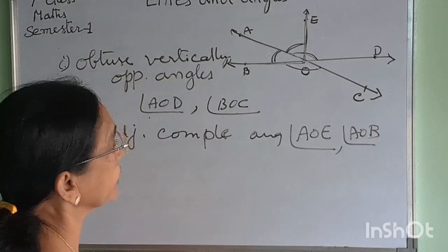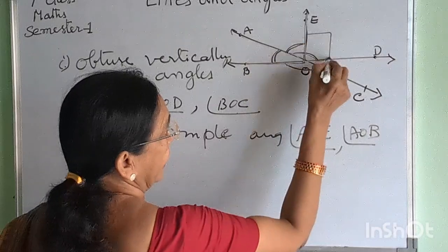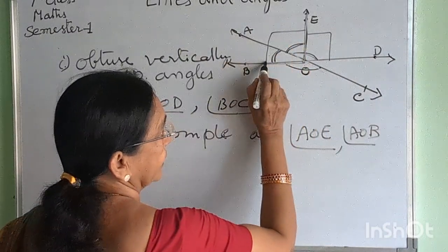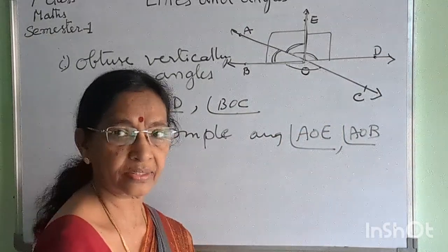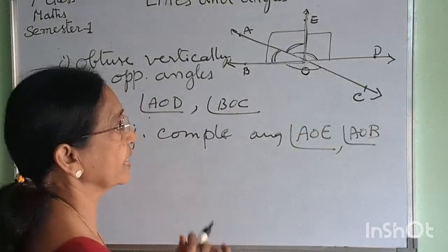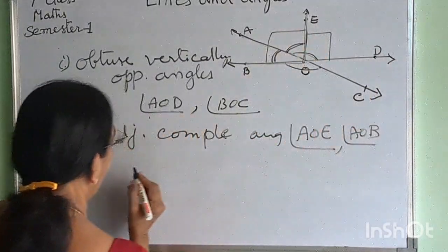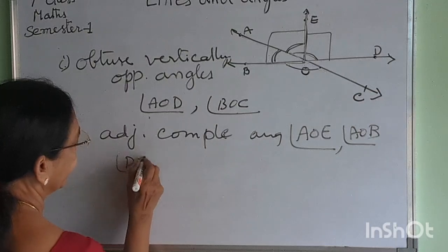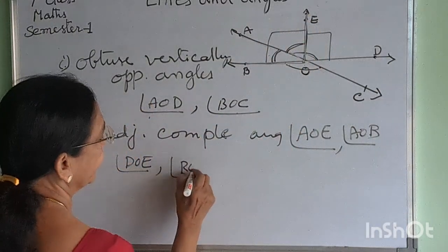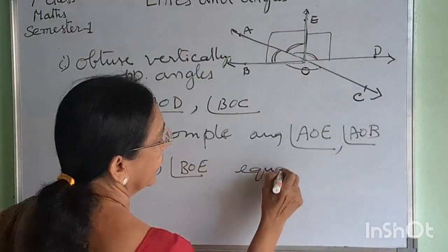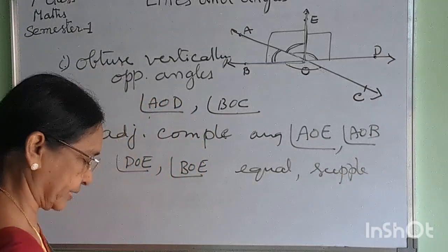Equal and supplementary angles. This angle is 90 degrees and this angle is 90 degrees, and the total is 180 degrees. Therefore they are equal and their sum is 180 degrees, so they are equal and supplementary angles. We write it as angle BOE and angle BOE — these two are equal and supplementary.